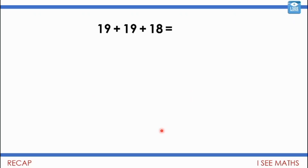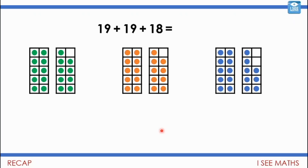So 19 plus 19 plus 18. Again, I could add the 10s and the 1s and put it all together, but looking at 19, 19, and 18, my favourite thing is to think of it as 3 lots of 20 and then ask how much less it is than 60. Of course it's 4 less, so it must be 56.